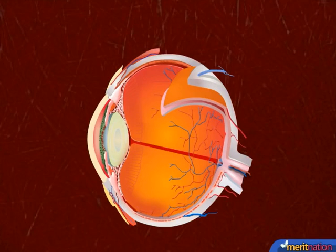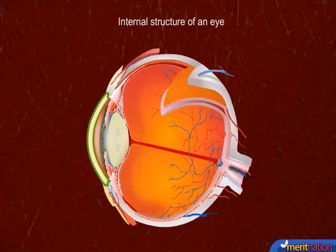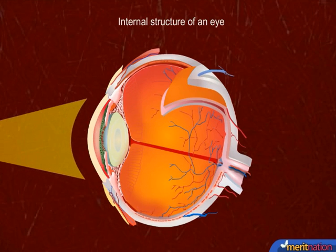The structure that you see on your screen is the internal structure of an eye. This layer is called the cornea. When light rays strike the cornea of the eye, they pass through the lens and get focused on the retina.